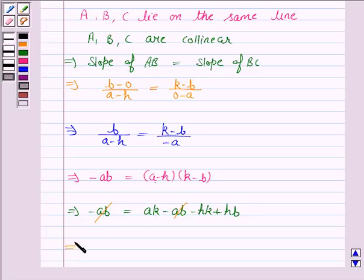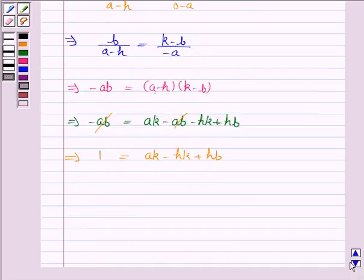This implies, since we have cancelled -ab, here we have 0. And now, this implies hk equals ak plus hb.